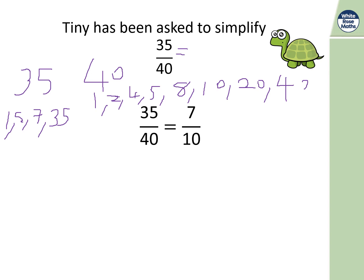The highest common factor from both lists is five, because five goes into 35 seven times and into 40 eight times. So divide top and bottom by five: 35 divided by five is seven, and 40 divided by five is eight — giving seven eighths. Tina made a mistake: she divided the top by five and the bottom by four. Whatever you do to the top you must do the same to the bottom.